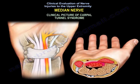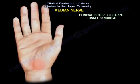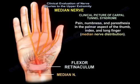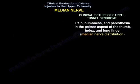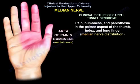Carpal Tunnel Syndrome. The clinical picture of Carpal Tunnel Syndrome: usually the patient will complain of pain, numbness, and paresthesia in the palmar aspect of the thumb, index, and long finger. It is at the median nerve distribution.